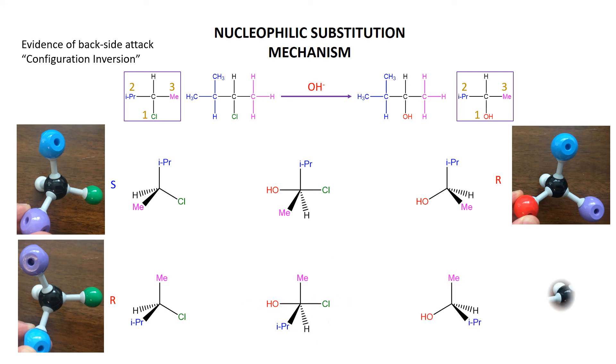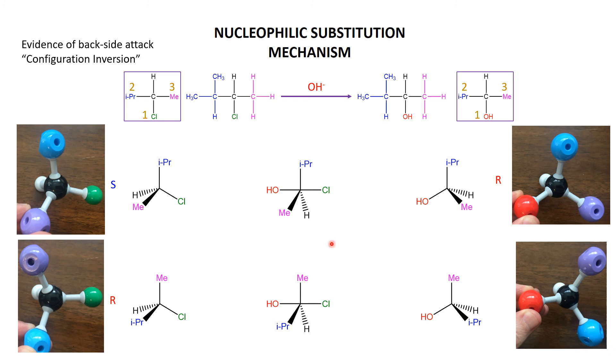We end up with this beautiful little picture: hydrogen at the back, hydroxide first priority, isopropyl second priority, methyl third priority. We're going around anticlockwise, so that's the S enantiomer. So we start with S, we end up with R. We start with R, we end up with S.